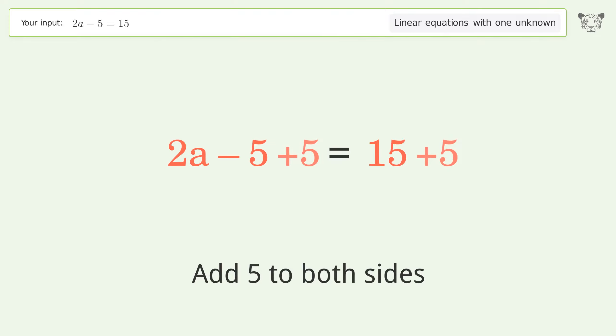Group all constants on the right side of the equation. Add 5 to both sides. Simplify the arithmetic.